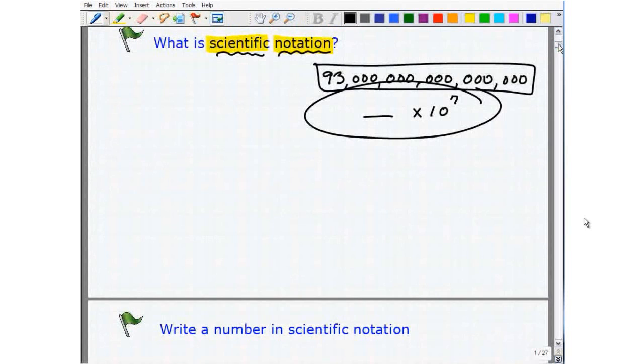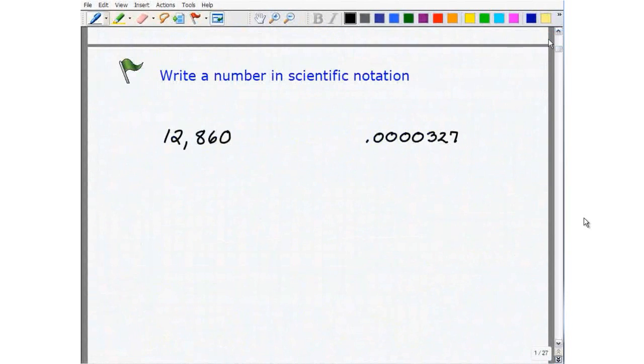Much easier to deal with than this number, which we call in decimal form. All right. So let's go ahead and learn how to write a number in scientific notation. So I've got two numbers here.